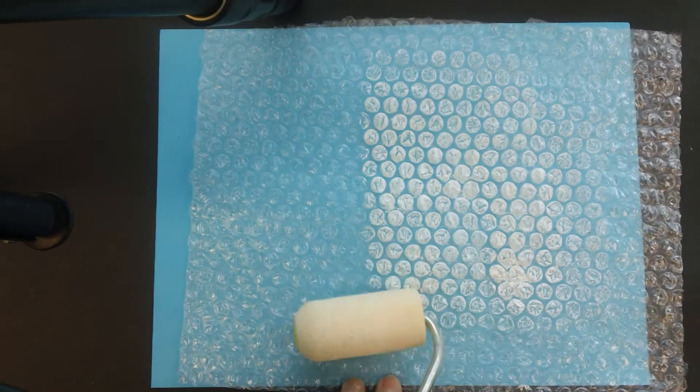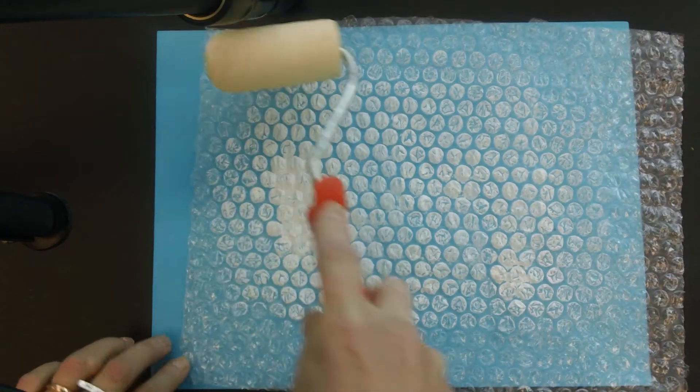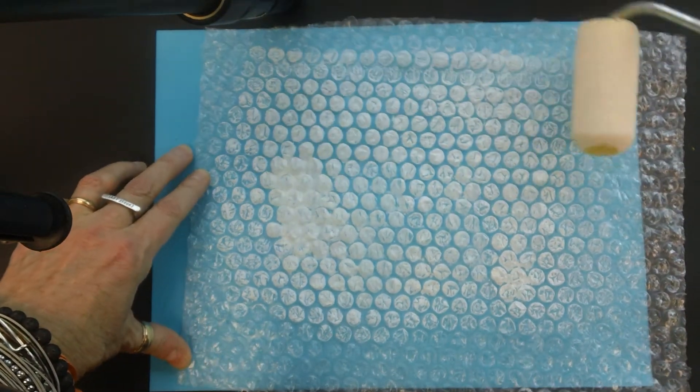We're going to set that aside. I'm going to take the bubble wrap and I'm going to roll white paint over the bubble wrap and now we can see it pretty easily because of the white paint.